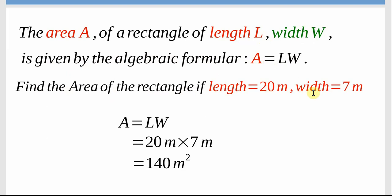is 20 meters and the width W is 7 meters. So all we need to do is use the formula here. We have the algebraic formula A is equal to L times W. So we plug in L, which is 20 meters, times the width, which is 7 meters, and we end up with 140 meters squared.